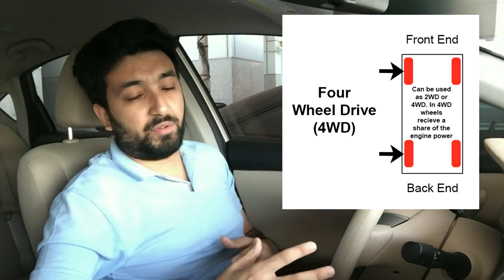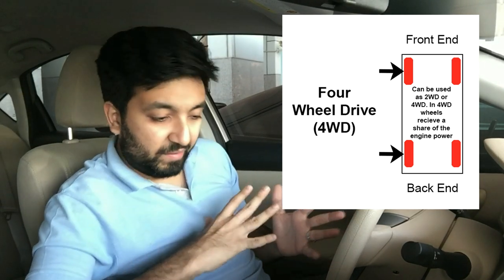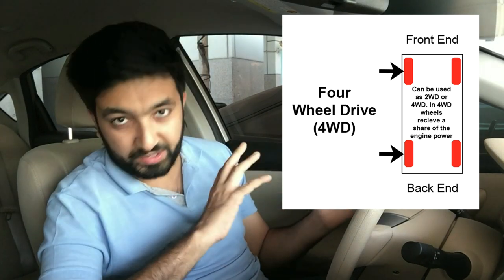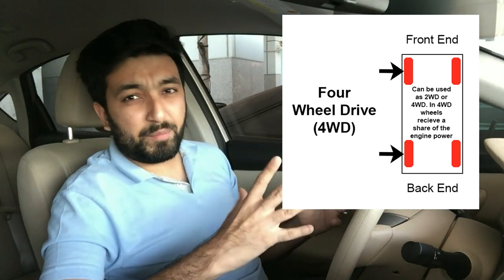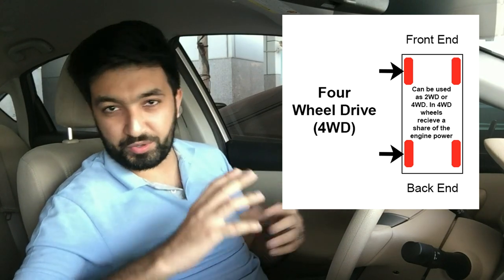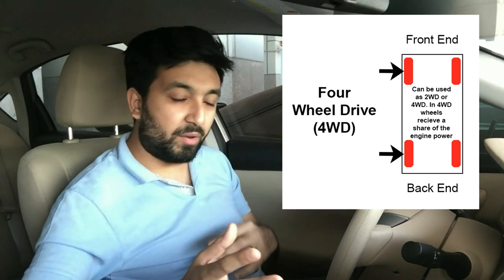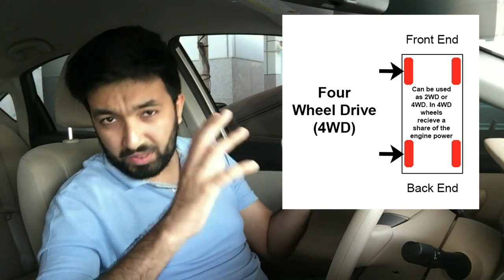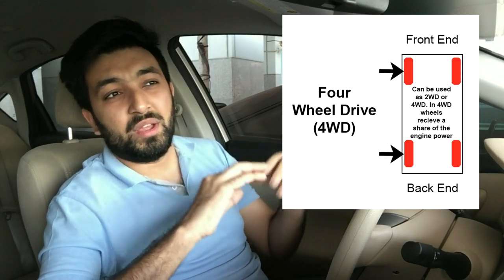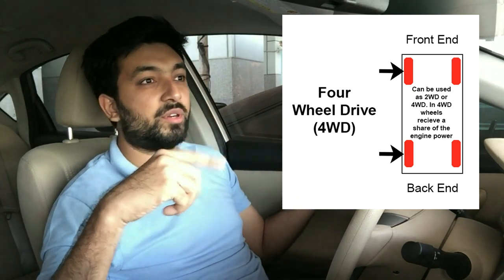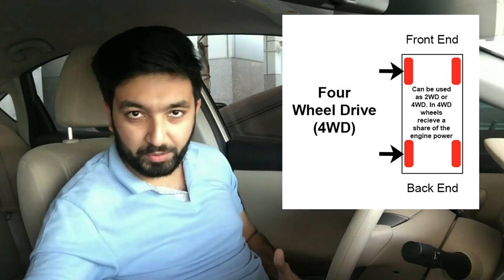The next type of drive system is four-wheel drive, mostly seen in SUVs. This system performs better in off-road conditions because all four wheels are powered at the same time. The power distribution may vary in different vehicles, but the wheels are powered to ensure that whenever you get stuck, the other wheels pull you out of the problem.